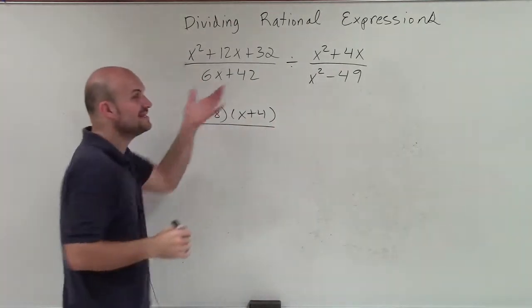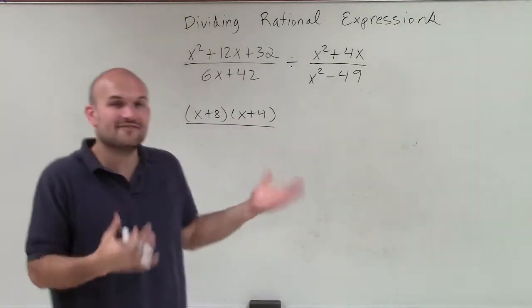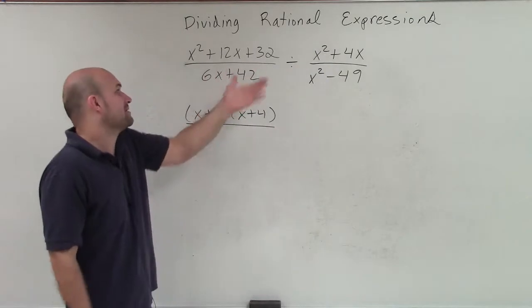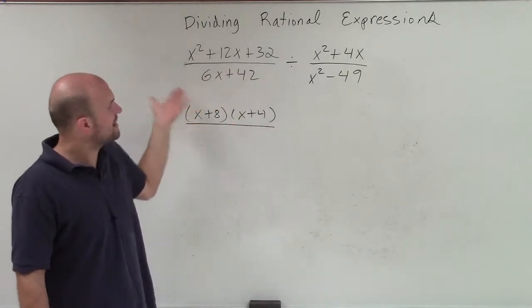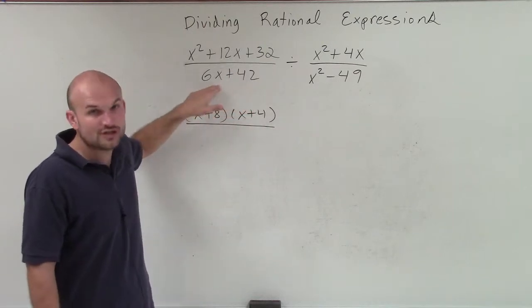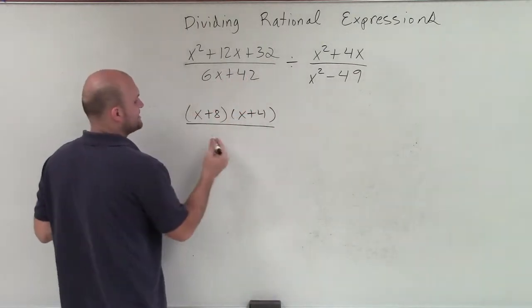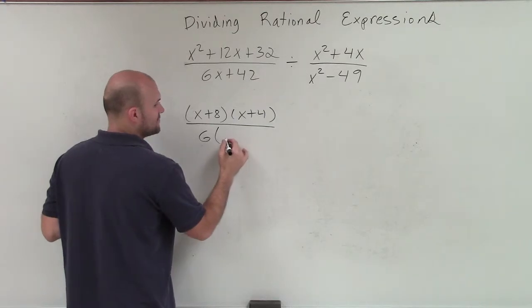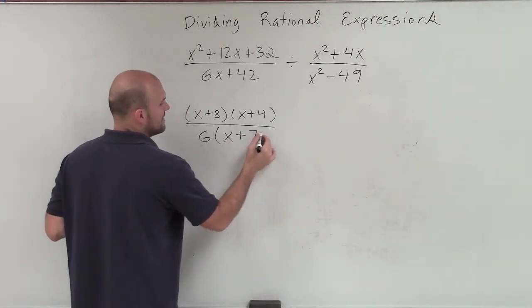In my denominator, I see that I only have a binomial. So I can't factor it the same way. I'm going to look at it and just say, all right, well, what two terms do these two share? And you could say, well, they both share a 6. So if I factor out a 6, I'm going to be left with an x plus 7.